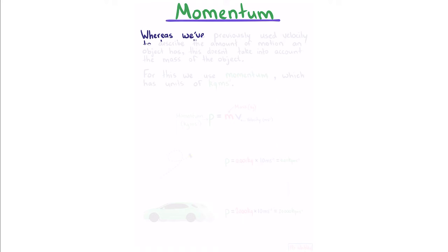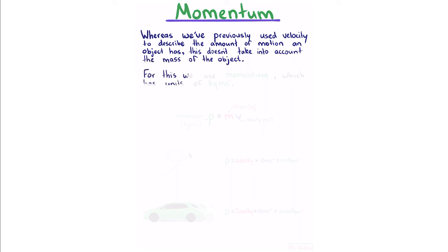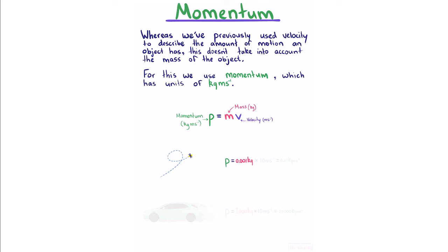Momentum. Whereas velocity describes the amount of motion an object has, it doesn't account for mass. For this we use momentum, with units of kg·m/s. Momentum = mass × velocity. A bee with mass 0.01 kg and velocity 10 m/s has momentum 0.1 kg·m/s. A car at the same velocity but much larger mass has a much larger momentum.